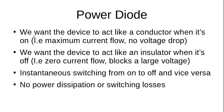We want that device to act like a conductor when it's on — maximum current flow with basically no voltage drop. If I multiply current by voltage, I get zero power dissipation. We want the device to act like an insulator when it's off — zero current flow and a large negative voltage. Again, multiplying current and voltage gives zero, so no power dissipation. So power doesn't get dissipated whether the device is on or off — ideally. I also want large current and large voltage handling so this can be called a power device, meaning I can connect it directly to my wall socket.